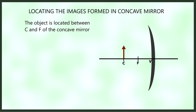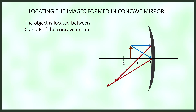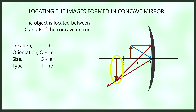Next, we move the object to somewhere between C and F, using the PF ray and V ray. The image is located beyond C, inverted, larger than the object, and a real image.